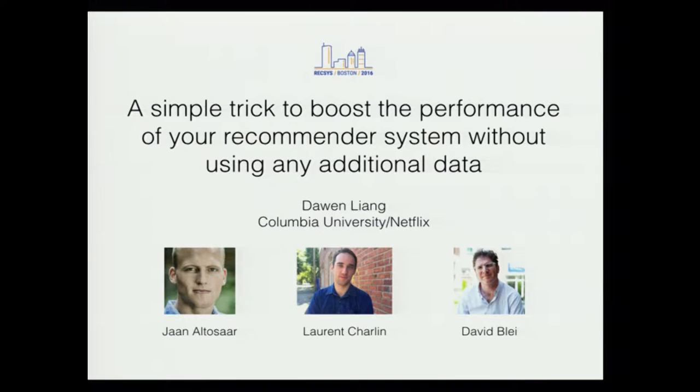I'm Darwin. I'm working at Netflix — I was at Columbia earlier. Today I'm going to talk about our paper, which is "Factorization Meets Item Embedding: Regularized Matrix Factorization with Item Co-occurrence," or we would prefer the unofficial title: "A Simple Trick to Boost the Performance of Your Recommendation System Without Using Additional Data." This work was done while I was at Columbia with my colleagues Yael Althonsar, Laurent Charling, and David Bly.